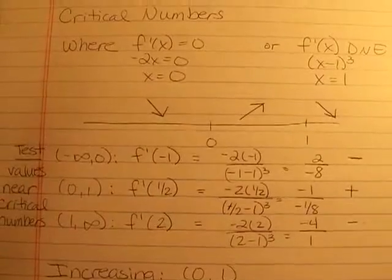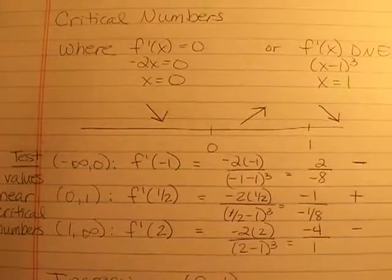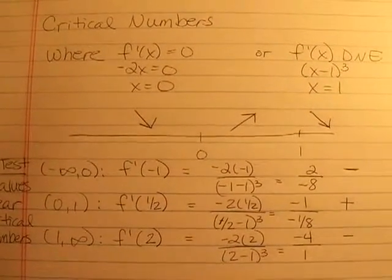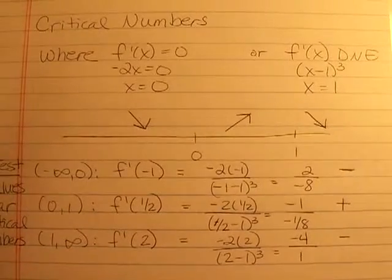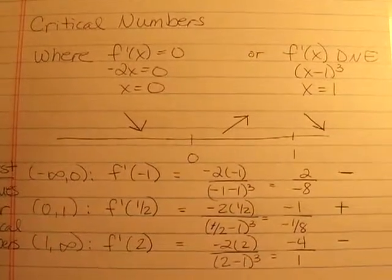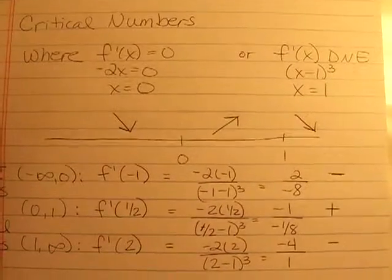So we can test our values. We test values near the critical numbers. So the first interval, we test a value that is between negative infinity and zero, and we come up with a negative number.